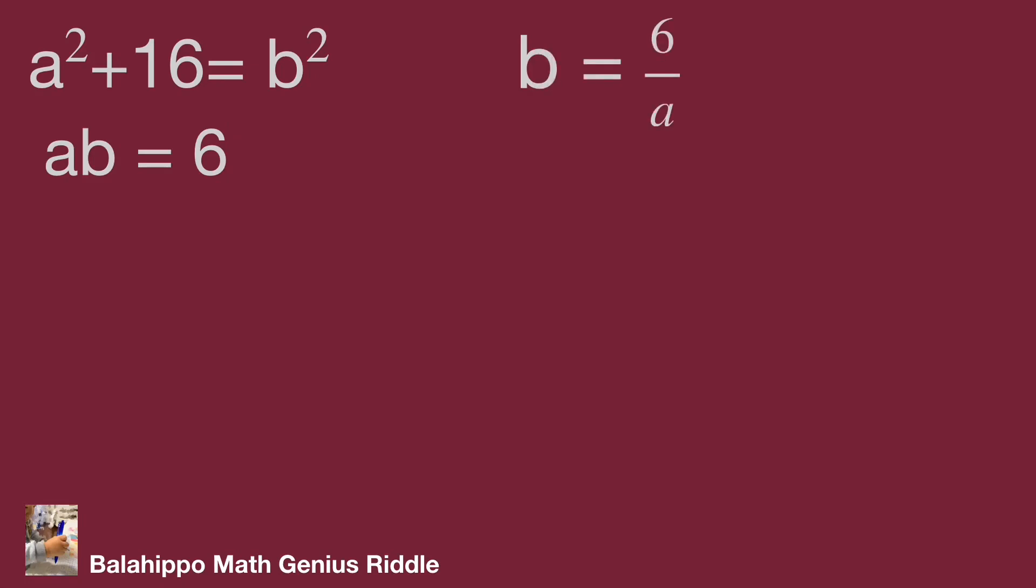Substitute b by 6/a. The equation is a² + 16 = (6/a)² = 36/a².